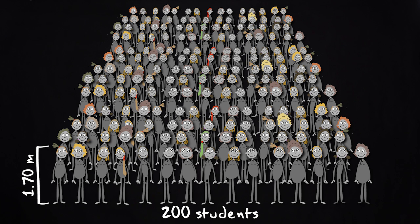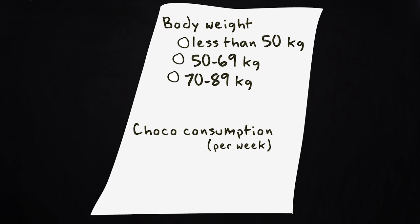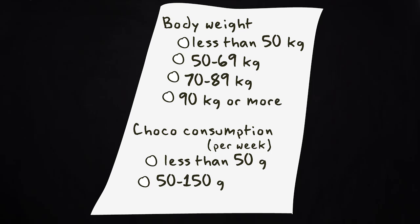I ask the students to report their body weight and their weekly chocolate consumption. They could choose between the categories less than 50kg, 50-69kg, 70-89kg and 90kg or more. They could indicate their chocolate consumption by choosing less than 50g per week, between 50-150g per week and more than 150g per week.